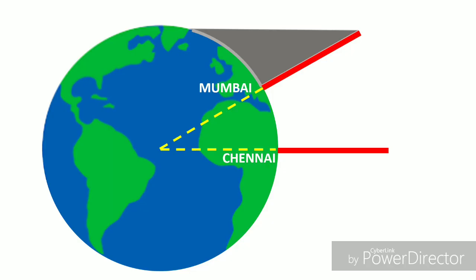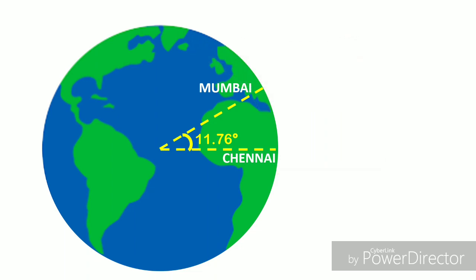Going back to our Earth model, we now know that theta is equal to 11.76 degrees. In a transversal, alternate interior angles are equal. Therefore, the angle between Chennai and Mumbai from the center of the Earth is 11.76 degrees. I then measured the distance between the locations of the two rods using Google Maps to get 1,318 km. After this, it becomes easy using direct and inverse proportions.